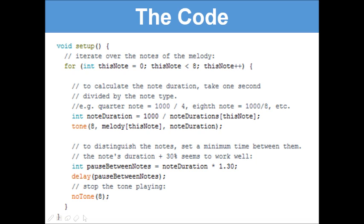To distinguish the notes, set a minimum time between them. The note's duration plus 30% works quite well. So we've said int pauseBetweenNotes equals noteDuration times by 1.3. To work out a percentage increase, we're timesing the note duration by 1.3 to get the pause between notes, and then we're having a delay(pauseBetweenNotes).